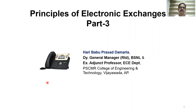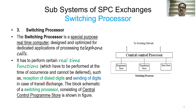This is part 3 of Principles of Electronic Air Changes. In part 2, we started a detailed discussion on the subsystems of electronic exchanges or SPC exchanges. We have so far discussed two subsystems: the termination part and the switching network.